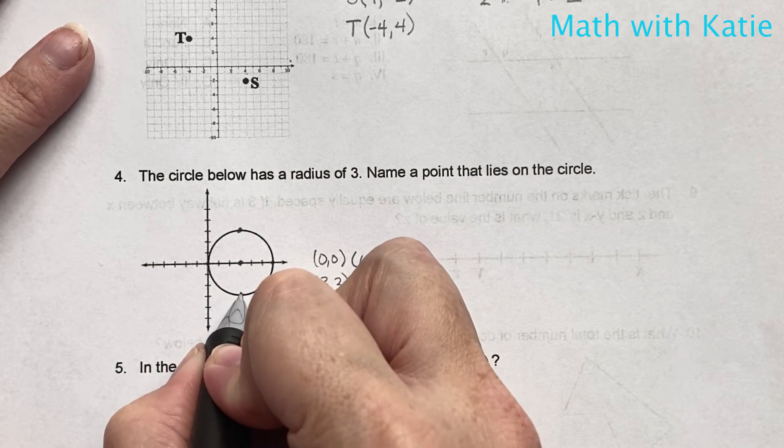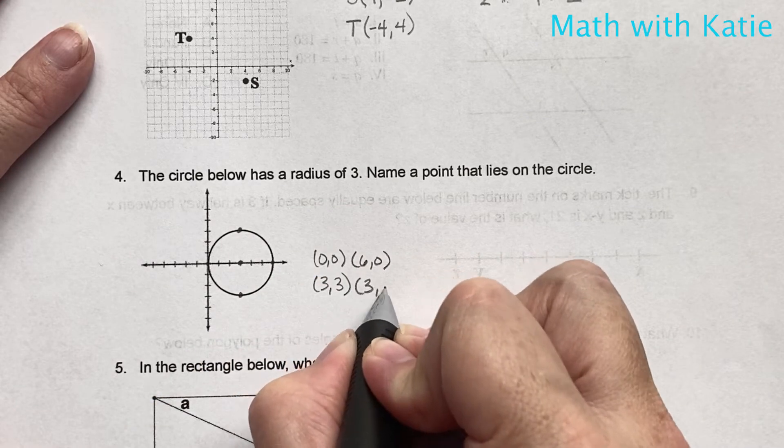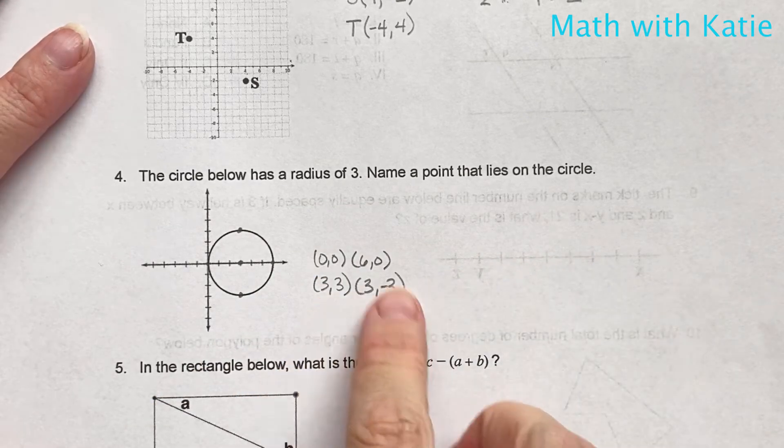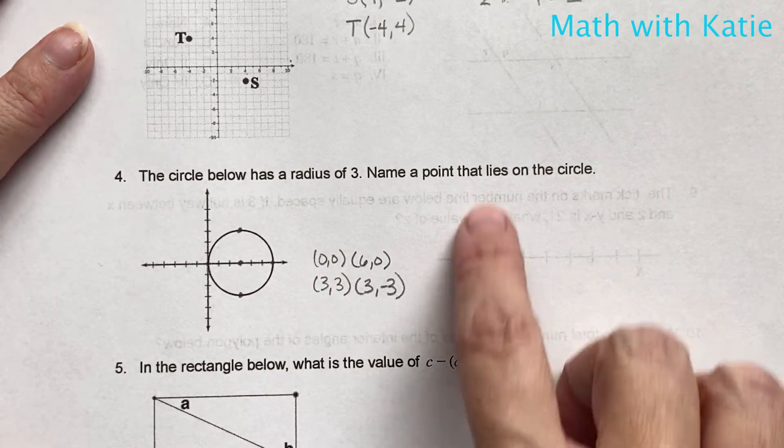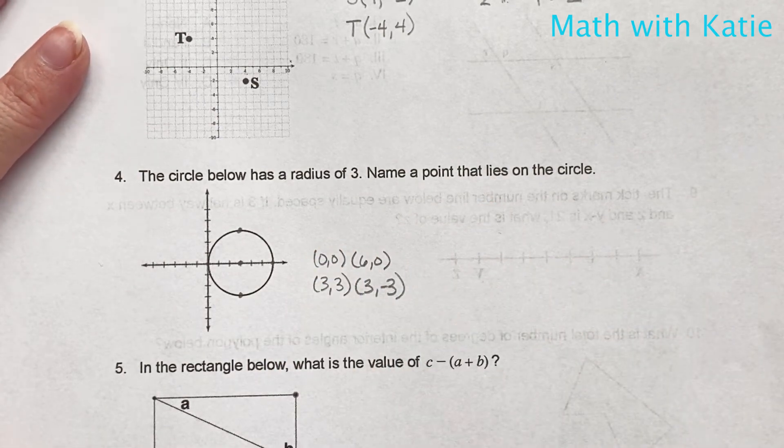And then also, go down 3, 3, negative 3. So all 4 of those points are on the circle, and it will just depend on what choices they give you, which one you're going to check.